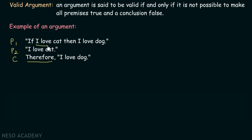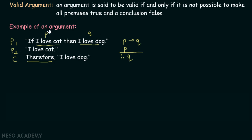Let's say 'I love cat' is represented by p and 'I love dog' is represented by q. The first statement is of the form p implies q, the second is simply p. So we can write this argument as: p implies q, p, therefore q. We can also represent it as: premises (p implies q) and p, which implies conclusion q.